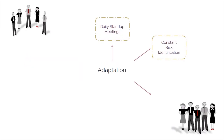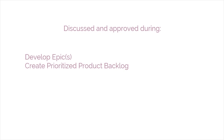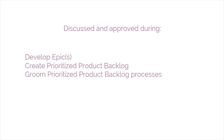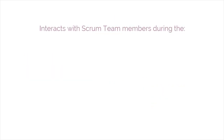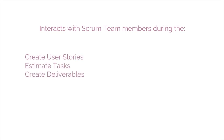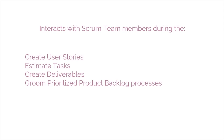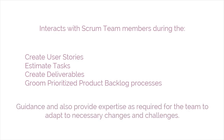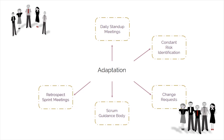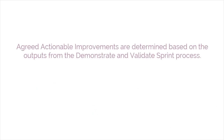Improvements can also result in Change Requests, which are discussed and approved during the Develop Epics, Create Prioritized Product Backlog, and Groom Prioritized Product Backlog processes. The Scrum Guidance Body interacts with Scrum team members during the Create User Stories, Estimate Tasks, Create Deliverables, and Groom Prioritized Product Backlog processes to offer guidance and provide expertise as required for the team to adapt to necessary changes and challenges. In the Retrospect Sprint process, agreed actionable improvements are determined based on the outputs from the Demonstrate and Validate Sprint process.